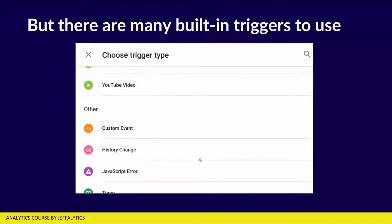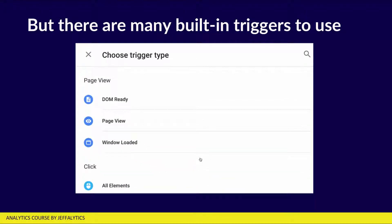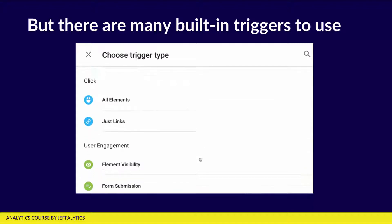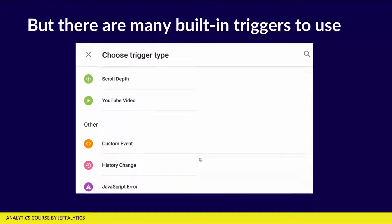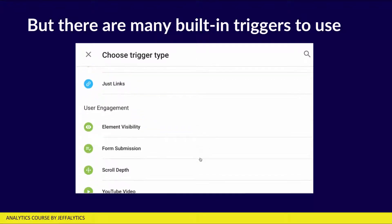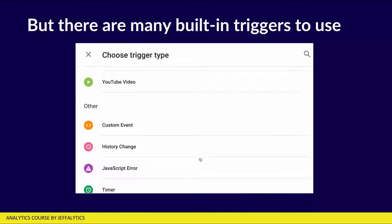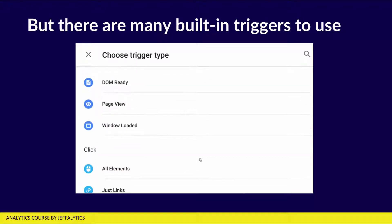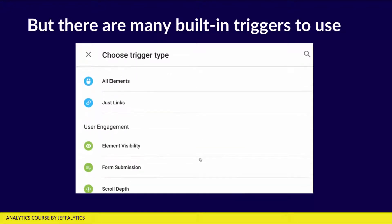You can track when somebody clicks, you can track when a YouTube video is played, you can set up your own custom event, you can even do stuff based on the DOM — the document object model — whenever the page finishes loading, which is DOM ready. You can say you want to do something whenever the page is visible, whenever the HTML is visible. Each trigger has its own set of rules for firing tags. For example, with the YouTube video trigger, I can trigger whenever a video starts, whenever it's completed, pausing, seeking, buffering, and I can even set it up so that at certain times in the progress of the video a tag fires.